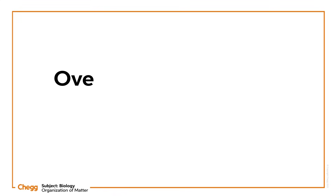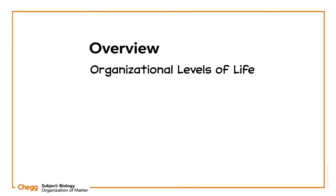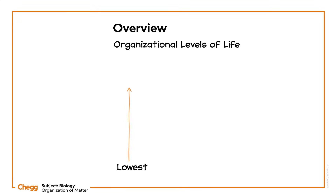Hi there. Today we're going to learn about the organisational levels of life, from the teeniest, tiniest level to the largest and most complex one. At present, we categorise the hierarchy into roughly 13 levels, and we do so because each of these levels is what makes up the one above it.